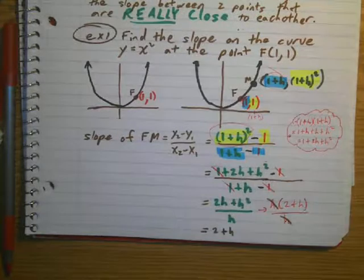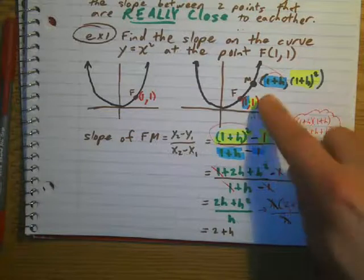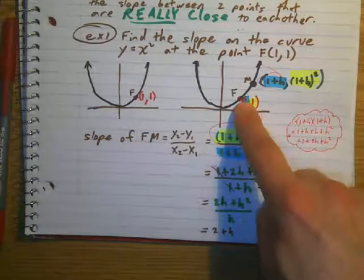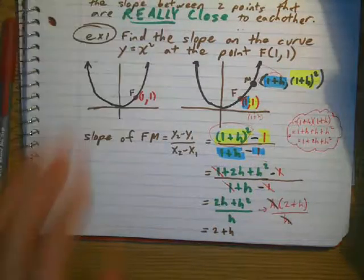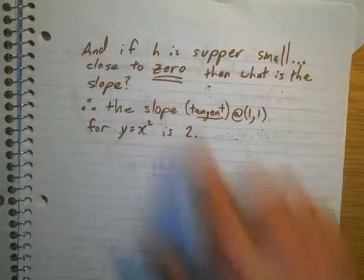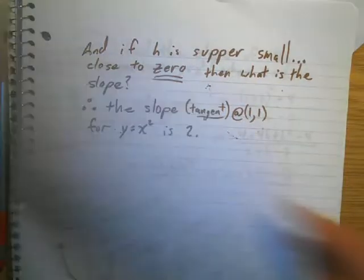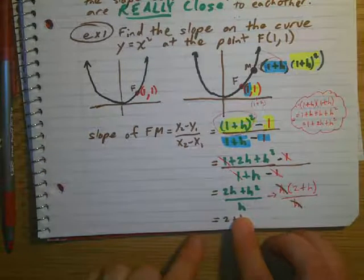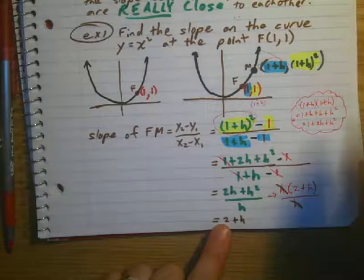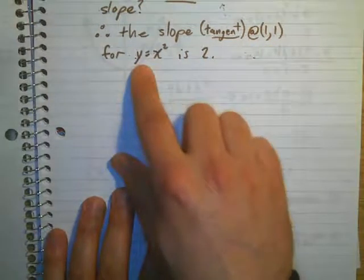So if I'm looking at this graph and I want the slope really, really, really close to this point, then I need h to be super, super, super small. If I make h super, super small — let's just say it's really, really close to 0 — then what's my new slope? If h is super, super close to 0, then my slope is going to be 2. So my slope to the tangent at 1, 1 for y equals x squared is 2.